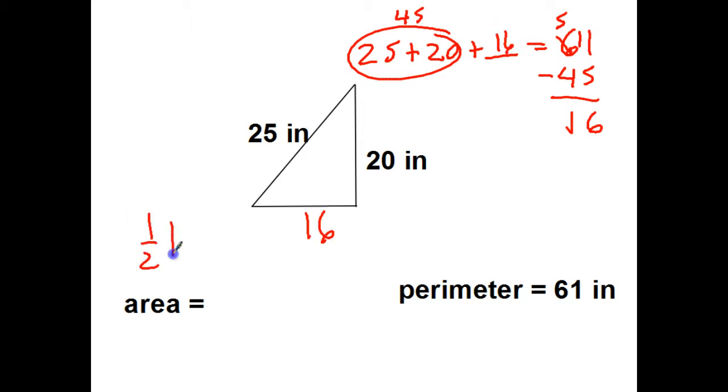Half base times height. Half of 20 seems to be the easiest thing to do. That would be 10. 10 times 16 equals 160 square inches.